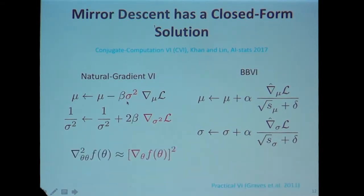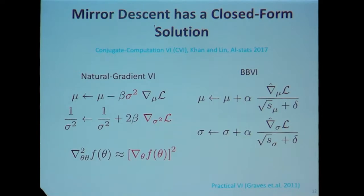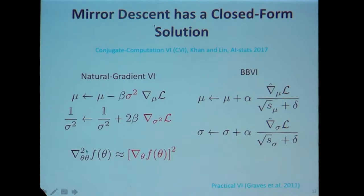To get from here to RMSProp, we do one more step. The gradient with respect to the variance requires computing a second-order derivative, not usually available in deep learning software. So we make an approximation: we take the Hessian and approximate it by the gradient magnitude — squared gradient approximating the Hessian. This approximation was also used by Alex Graves in his paper. If you plug this in, call it the scale vector, and do some manipulation, you recover RMSProp.